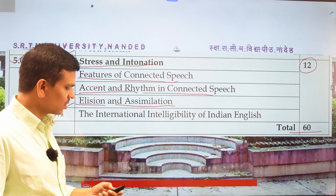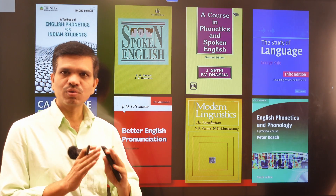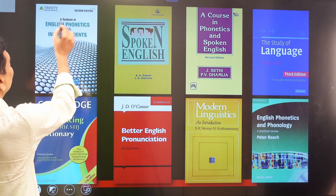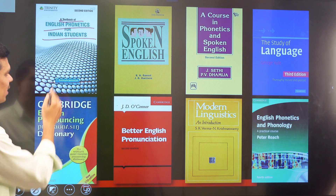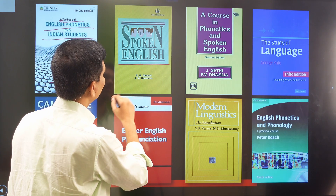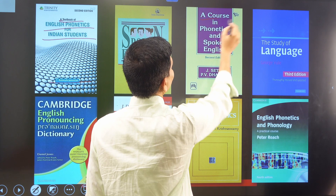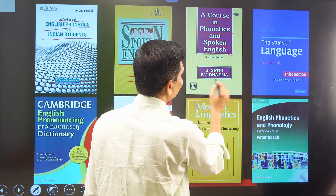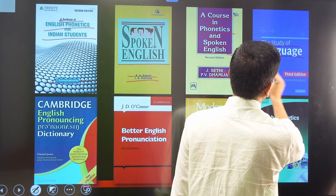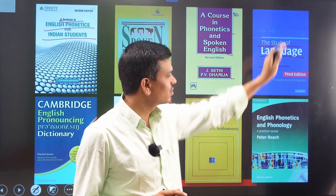Now let's look at a few reference books. All these books are very important if you want to study this paper. The first book is A Textbook of English Phonetics for Indian Students by T. Balasubramanian. Then we have Spoken English, a very famous book on phonetics, written by Bansal and Harrison. Another popular book is A Course in Phonetics and Spoken English by Sethi and Dhamija. We also have The Study of Language by George Yule, which covers language framework, dialects, and varieties.